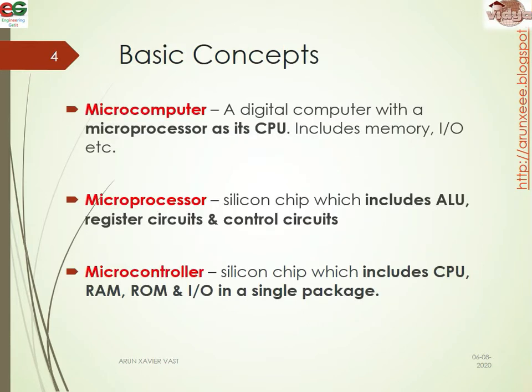Now we can check some of the basic concepts. What is a microcomputer? It is a digital computer with a microprocessor as its CPU, and includes memory, I/O, etc. What is a microprocessor? A microprocessor is a silicon chip which includes ALU, register circuits, and control circuits, and it does not have any RAM and ROM. Next, microcontroller is also a silicon chip which includes CPU, RAM, ROM, and I/O devices in a single package.